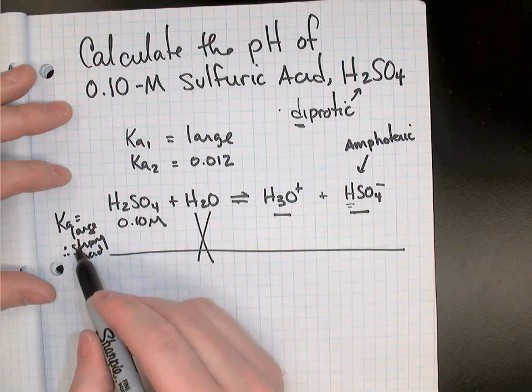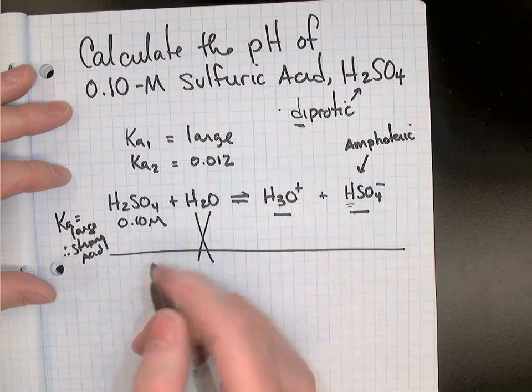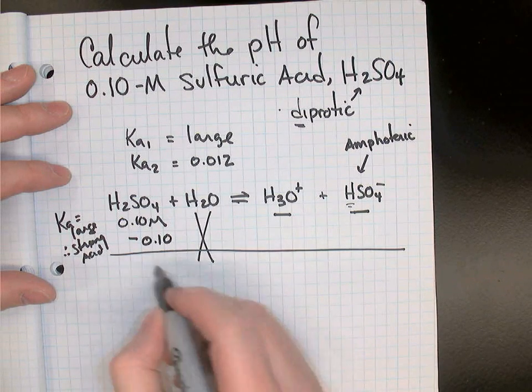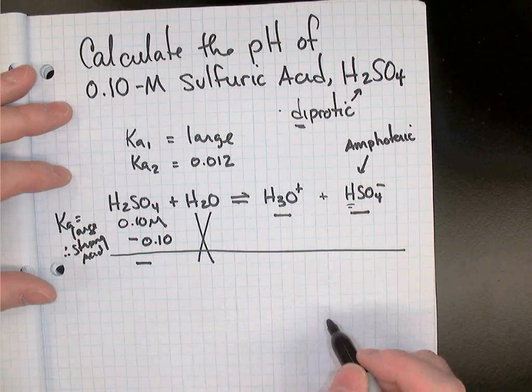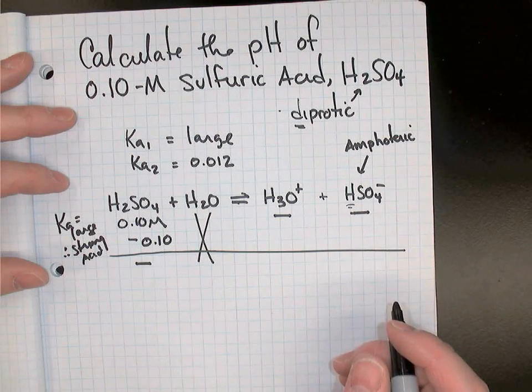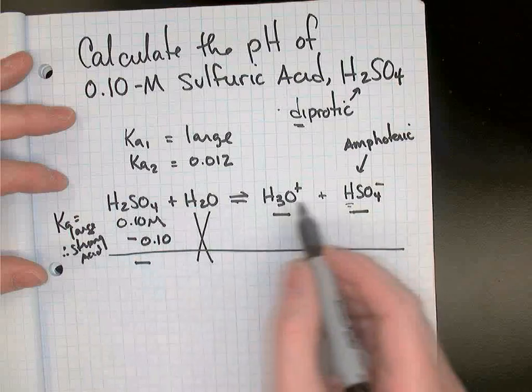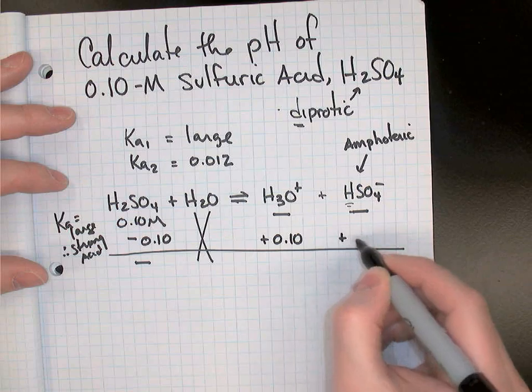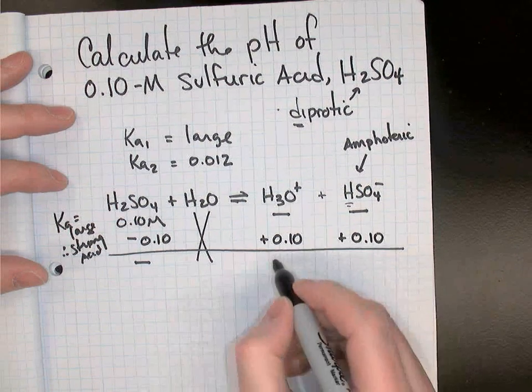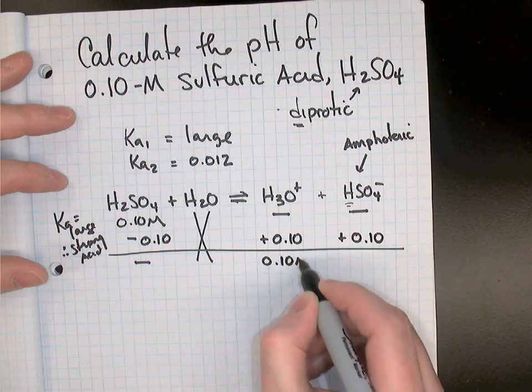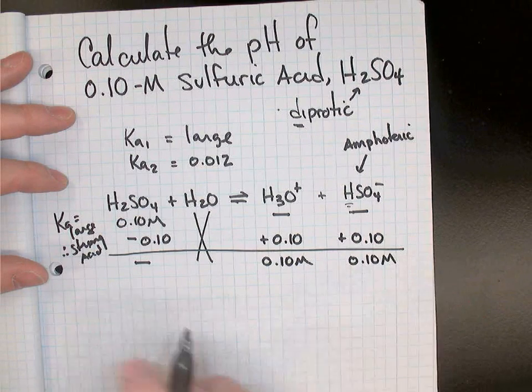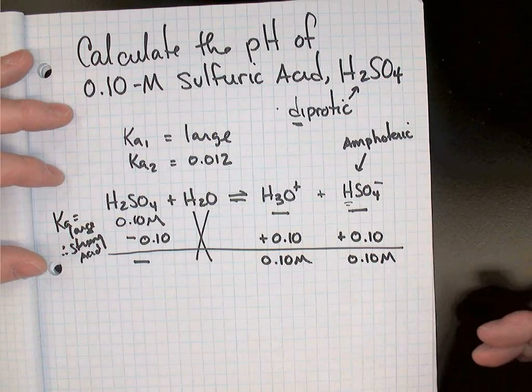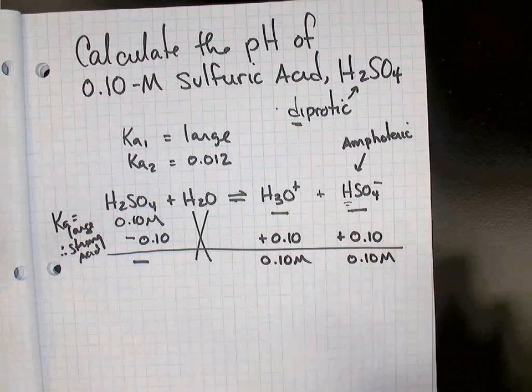Since our acid was strong, it dissociates completely. So we'll lose everything that we had to begin with, which means that at equilibrium, there's really no H2SO4 remaining. The 1 to 1 ratios here means that the hydronium will increase by 0.10 and the HSO4- will also increase by 0.10. So at equilibrium after the first step, we have 0.10 molar hydronium and 0.10 molar HSO4-. So that first step is done.